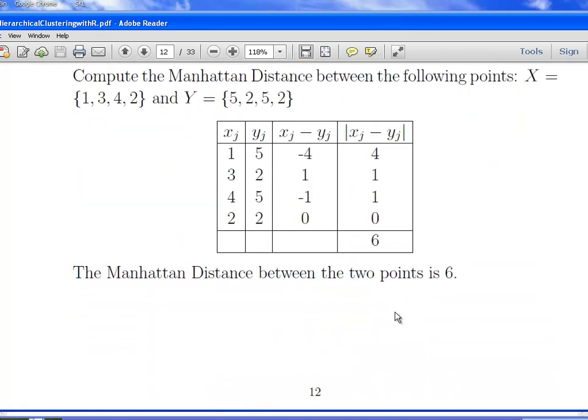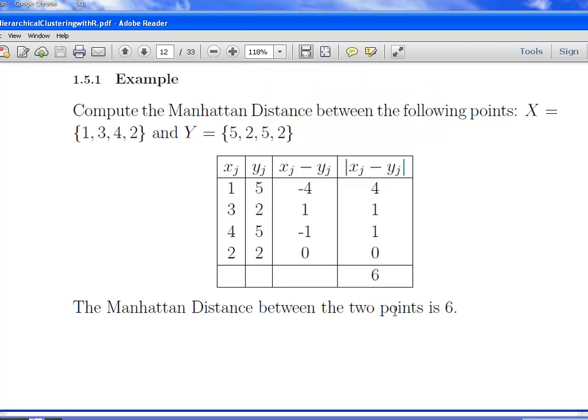The Manhattan distance for this example here, 1, 3, 4 and 2, and 5, 2, 5 and 2, get the difference for each variable for both cases. So here it's 1 and 5, so we get a difference of minus 4, 1, minus 1, 0. Then get the absolute value of that, just disregard the sign and then add them up. So we get 4 plus 1 plus 1 plus 0. The city distance here, the city block distance or the Manhattan distance is 6. If you consider it, it's like if you're walking around a grid, that you can't walk through a building, you have to walk around the side of it, so that's what you might call the city block distance. If you're in Manhattan, walking around a grid, one of the blocks.